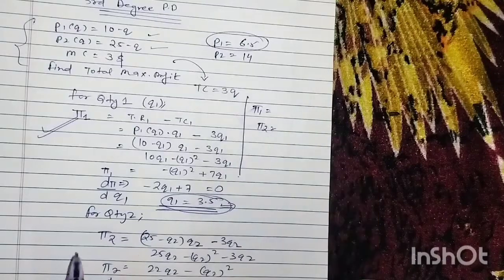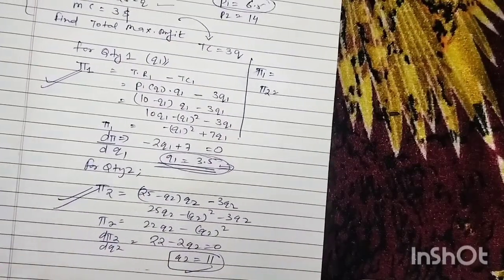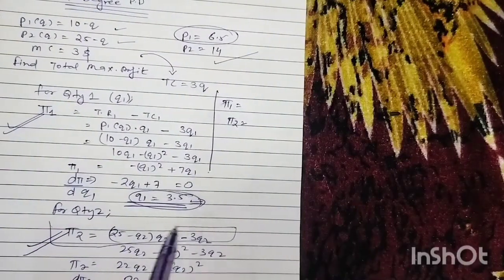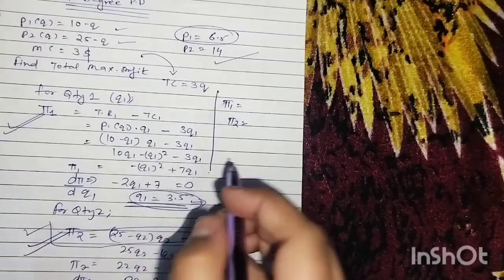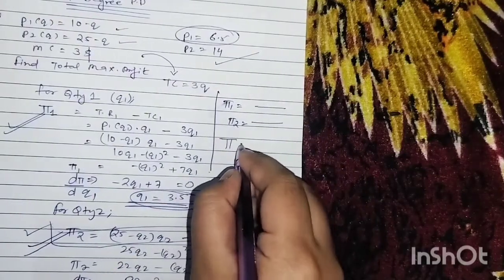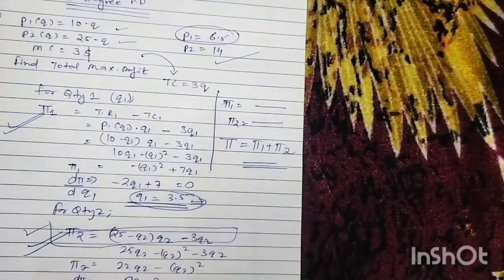Also find out the value of π2 by putting the optimal value of Q2 and P2 in this function, in this equation. Now by obtaining the simultaneous values, you can find out the total profits by π1 plus π2.